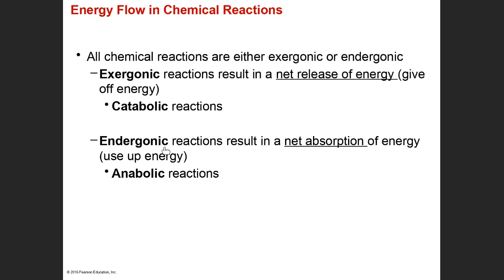An exergonic chemical reaction means that there has been a release of energy. Endergonic is the opposite — this means that this is a chemical reaction that requires energy to proceed; we need to put energy into that chemical reaction. For exergonic, think like 'exit' — we're having energy exit the reaction. Endergonic means we need energy to go into the reaction; think 'into' or 'enter.' We're going to need energy to go into an endergonic chemical reaction.